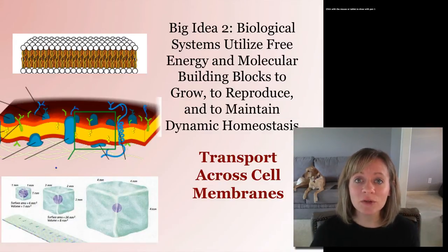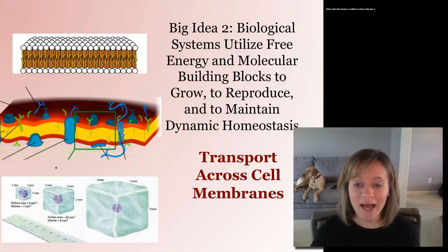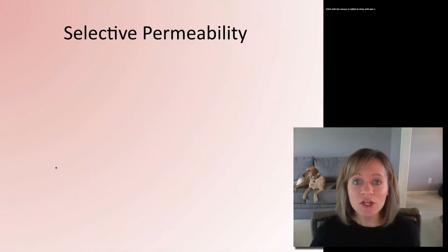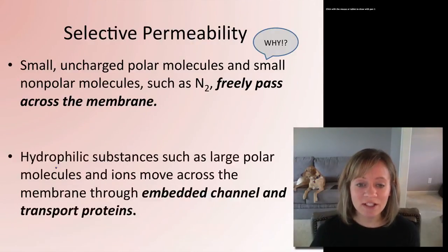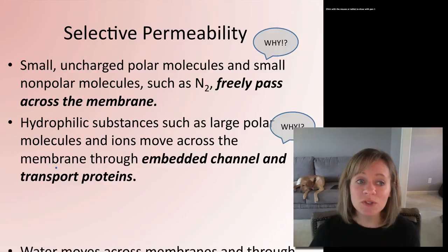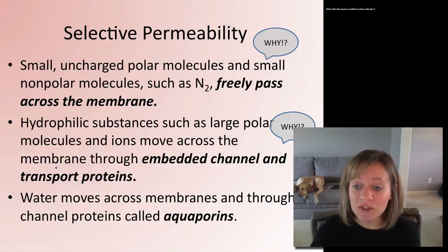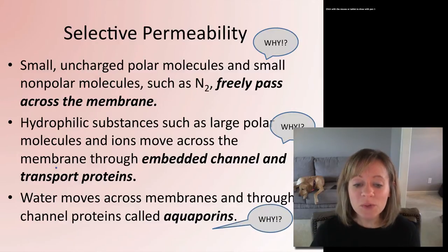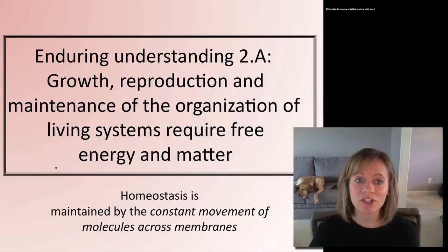Let's take a closer look at how exactly that transport across the membrane happens. Remember, we looked at three things about selective permeability: small uncharged particles can freely pass, large molecules need some help, and water also needs some help. Let's take a closer look at how each of these things actually happens.